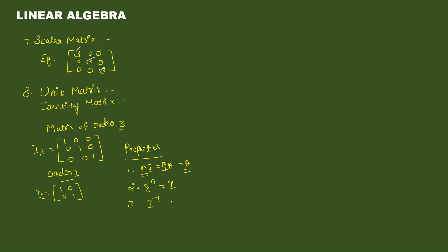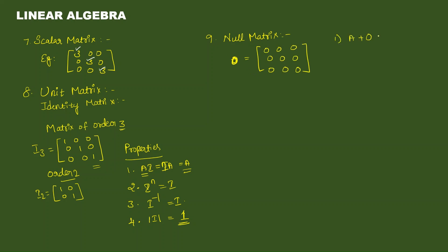Identity matrix inverse is the identity matrix itself. Next — null matrix. The m cross n matrix whose elements are all 0 is called a null matrix. Property: A plus O equals O plus A equals A, so O is the additive identity. Also, a matrix minus itself equals the null matrix.